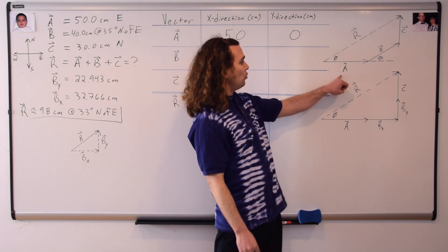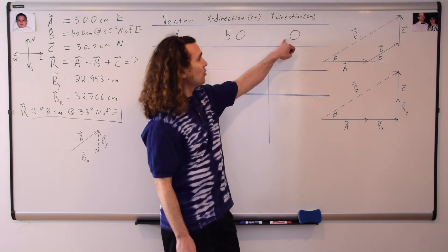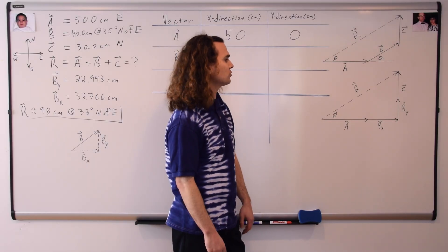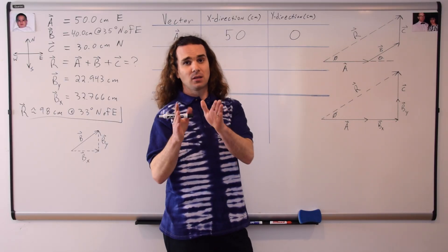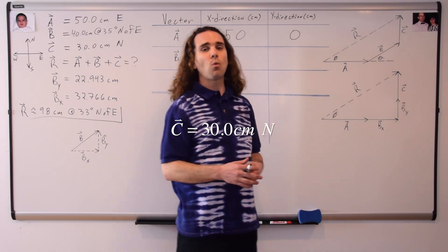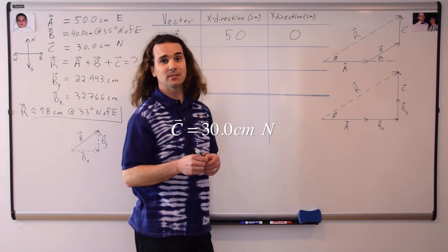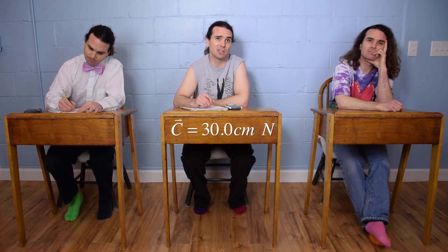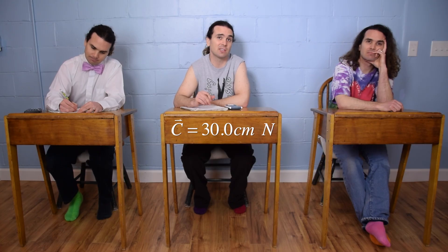Correct, vector A is only in the x-direction, therefore it has no component in the y-direction, therefore the y-component is going to be equal to zero. Bobby, vector C is 30.0 centimeters north, please give me the x and y-components of vector C. Vector C is only in the y-direction, so its x-component is zero, and its y-component is 30 centimeters.